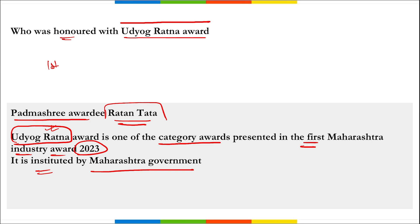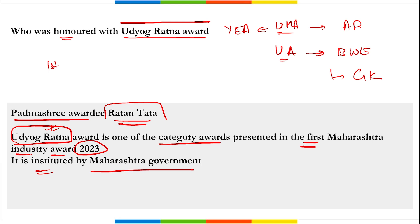Three other awards were presented during the ceremony. The Udyog Mitra Award for Young Entrepreneur was awarded to Adar Poonawala, CEO of Serum Institute of India. The Udyogini Award for Best Women Entrepreneur was awarded to Gouri Kirloskar. The Utkarsh Marathi Udyojak Award for Outstanding Marathi Entrepreneur was awarded to Vilash Shinde.